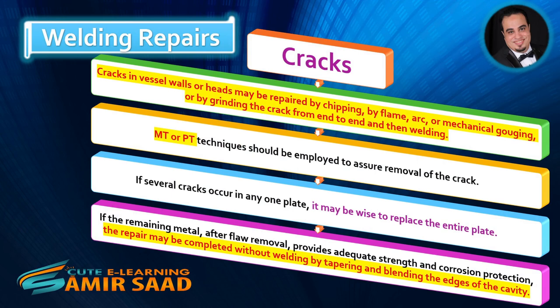Cracks: Cracks in vessel walls or heads may be repaired by chipping, by flame, arc, or mechanical gouging, or by grinding the crack from end to end and then welding. MT or PT techniques should be employed to assure removal of the crack. If several cracks occur in any one plate, it may be wise to replace the entire plate. If the remaining metal after flaw removal provides adequate strength and corrosion protection, the repair may be completed without welding by tapering and blending the edges of the cavity.